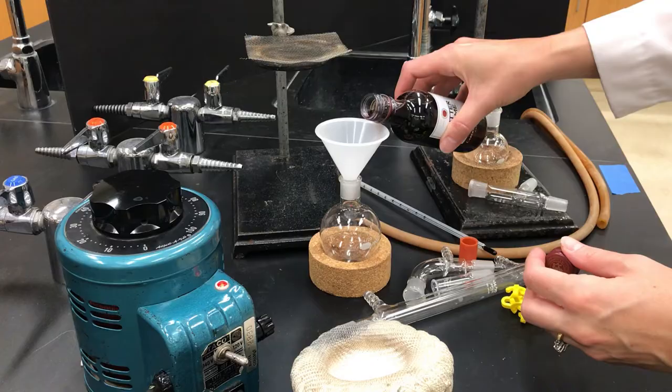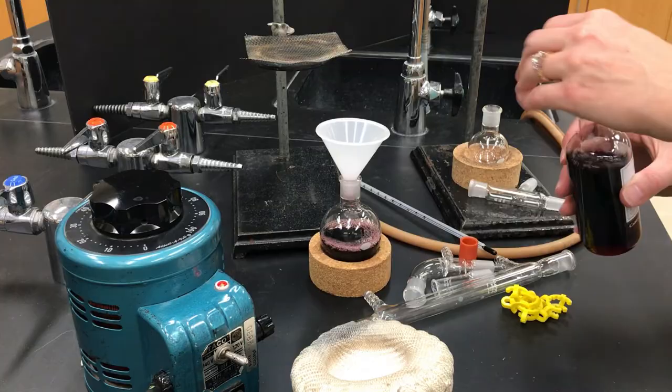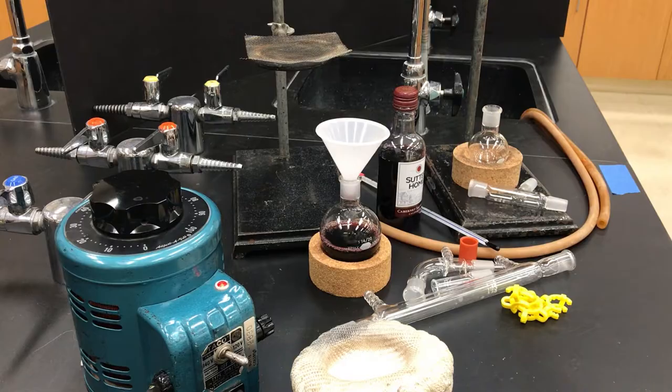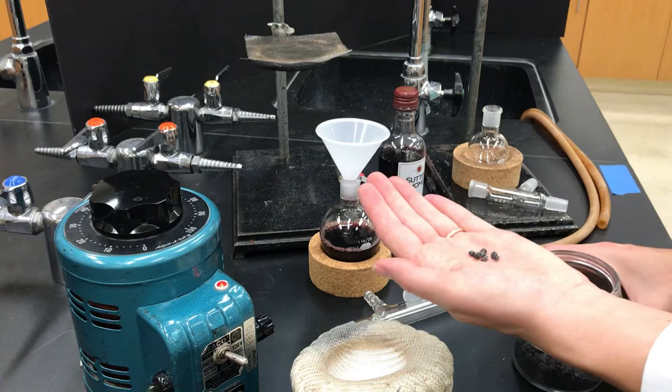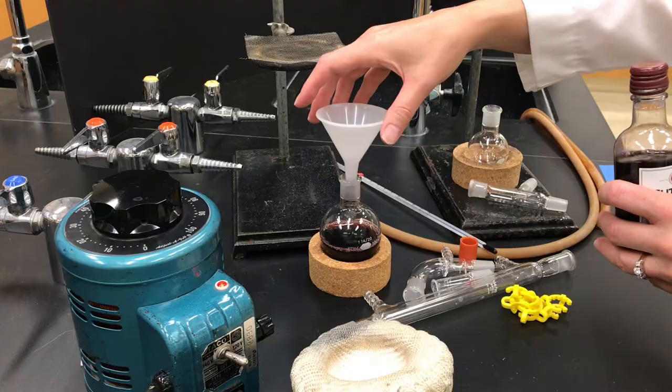The next thing I do is put the liquid to be distilled into a round bottom flask. Here I'm going to use red wine, so I'll just pour some in. Next I'm going to add some boiling stones. Boiling stones are little pieces of rock that ensure that your boiling is going to happen controllably, that you're not going to get bumps. Bumps just mean little bubbles that erupt really violently and uncontrollably and unexpectedly, so it ensures a smooth controlled boil. You just add a few of them.